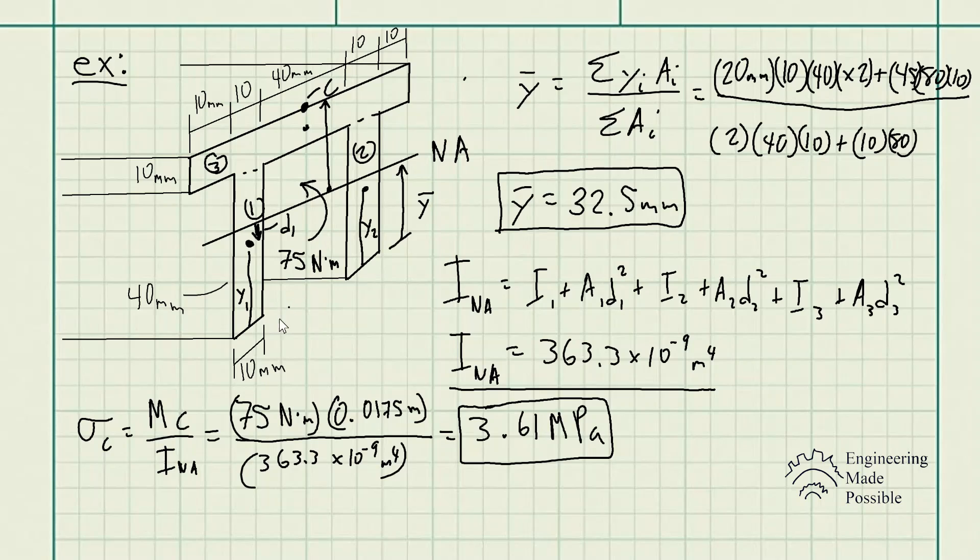Now let's solve for the bottom portion. In this case, we know it's in tension. The C would be from the neutral axis all the way to the bottom of the beam, which in this case would be Y bar, 32.5 millimeters. Let's plug it in and we get 6.71 megapascals at the bottom where the beam is experiencing tension.